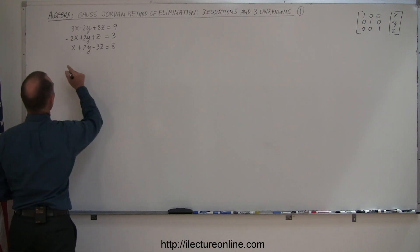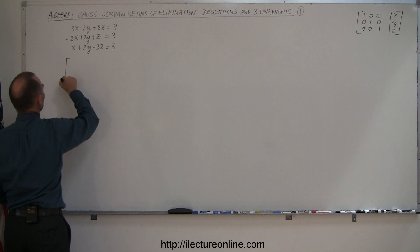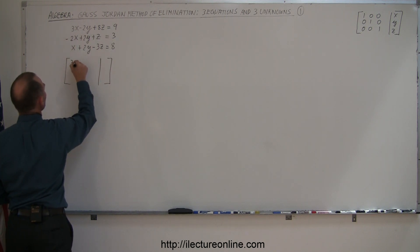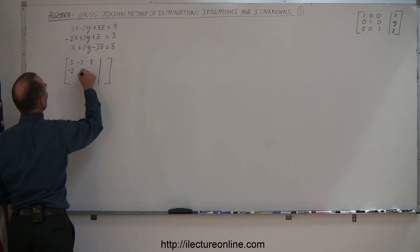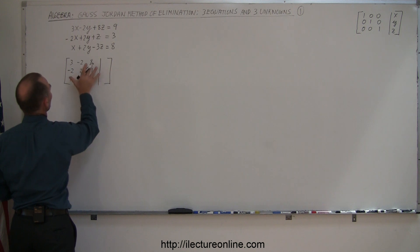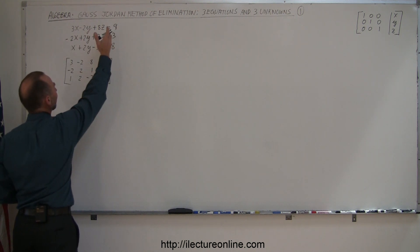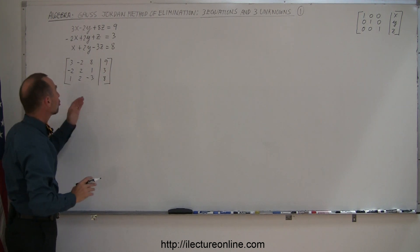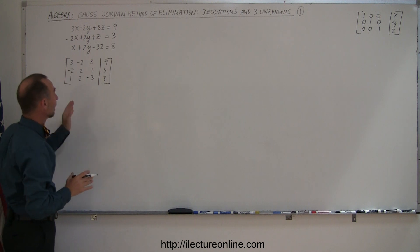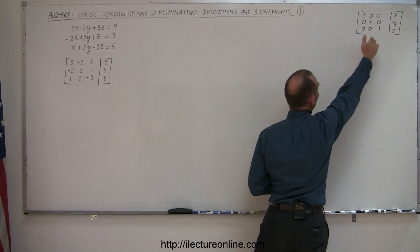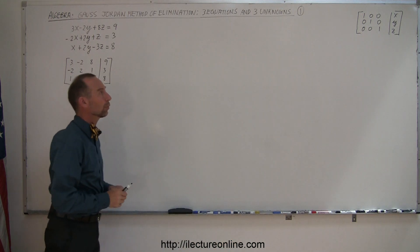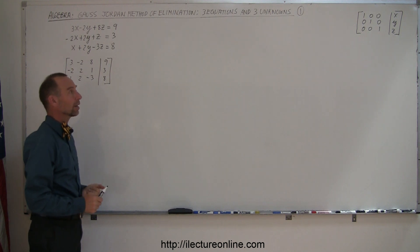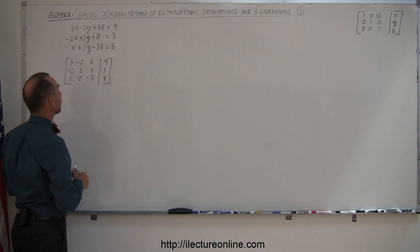The way to do that is to take the coefficients of the equations and the numbers on the right and place those into what we call an augmented matrix format. So you get coefficients 3, negative 2, 8, negative 2, 2, 1, 1, 2, negative 3 — those are the coefficients of the variables — and the numbers to the right of the equal sign go over here. The objective is to transform this into a format with ones across the diagonal and zeros everywhere else for the coefficients of x, y, and z, and then to the right you'll have the values for x, y, and z — the solution to these three equations.